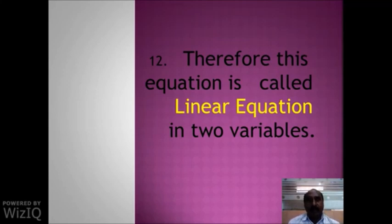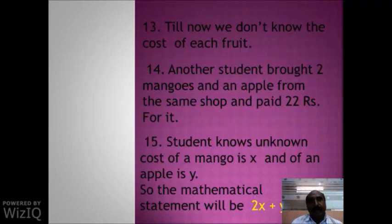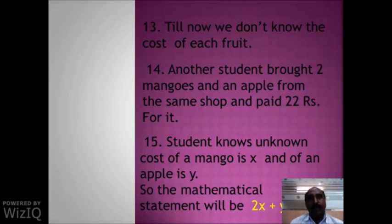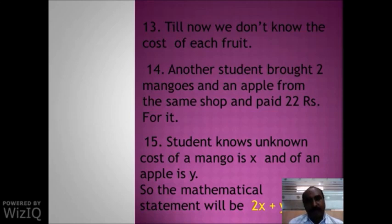The equation is called a linear equation because its graph is a straight line. However, we still don't know the cost of each fruit because we have represented only one equation graphically. Now, this activity continues further.